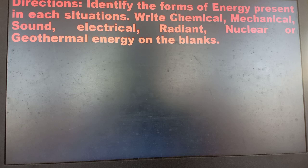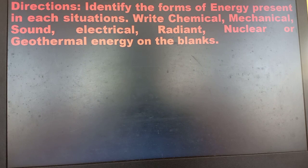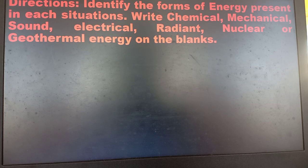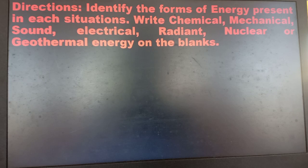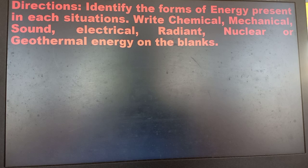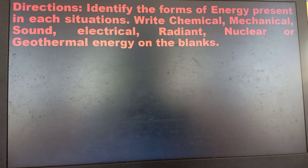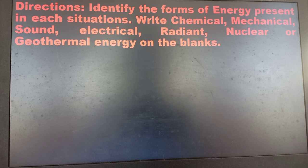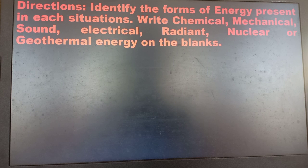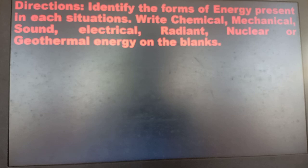Mechanical energy is energy in motion — everything that moves has mechanical energy. Sound energy is produced by a vibrating object; if there is a vibrating object, there is sound energy. Electrical energy is produced by moving electrons — all our electrical appliances use electrical energy. Radiant energy involves heat and light. Nuclear energy uses atoms to produce electrical energy. Geothermal energy uses the heat of the earth to generate electricity.